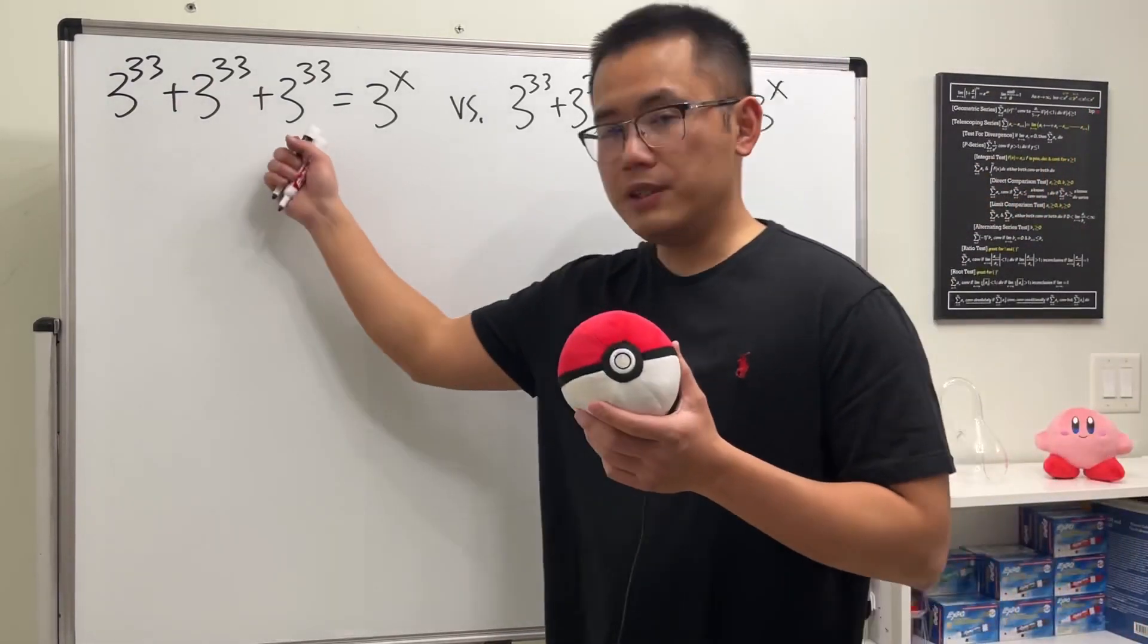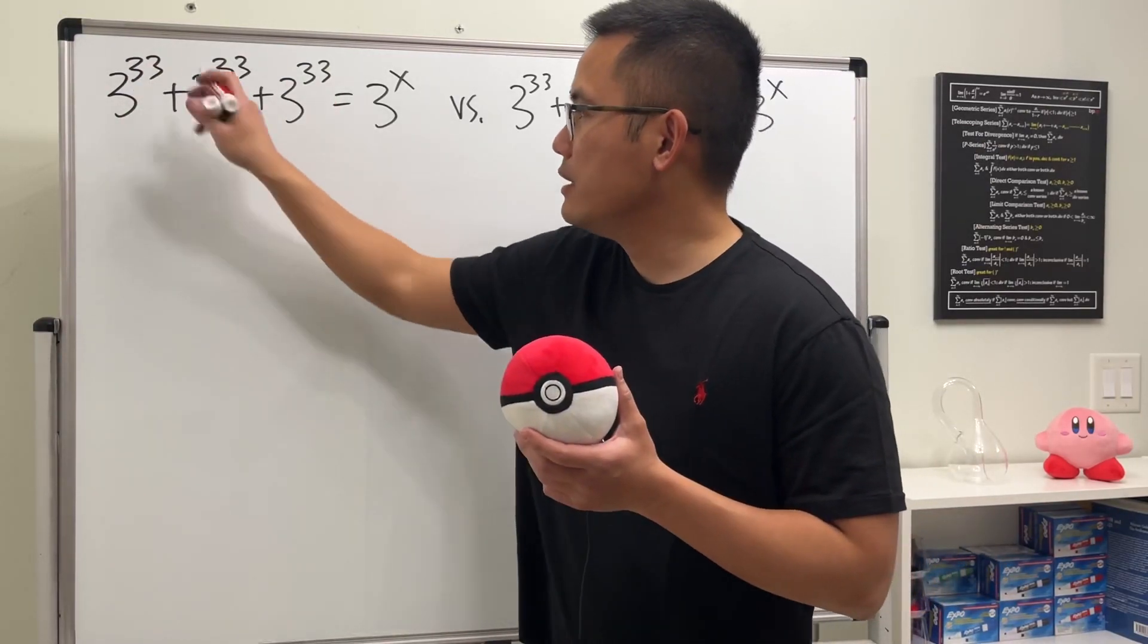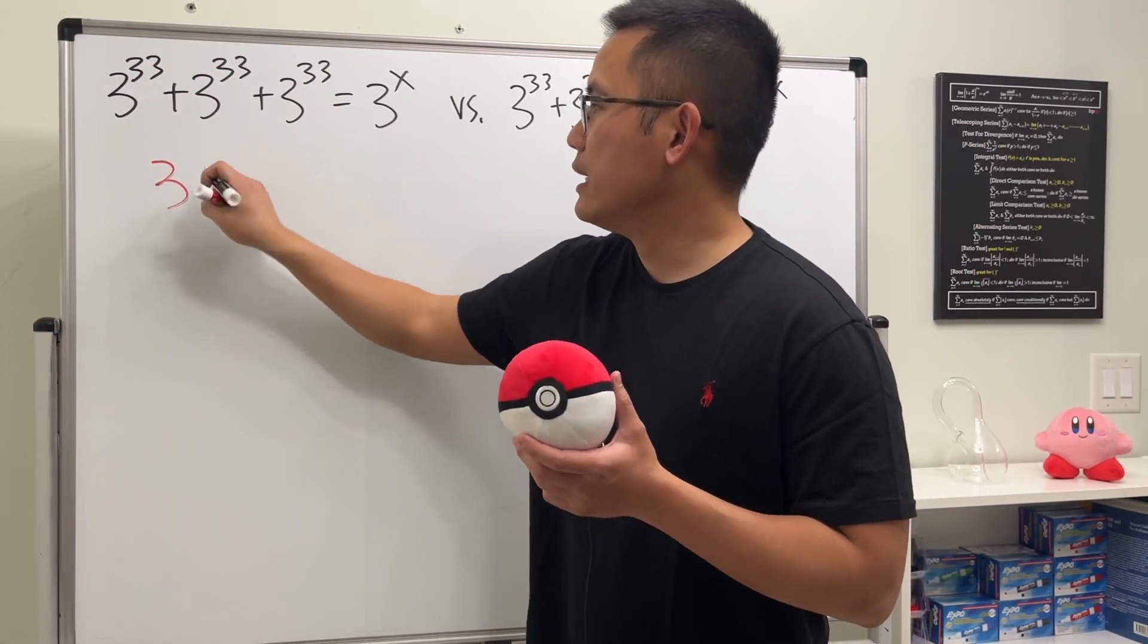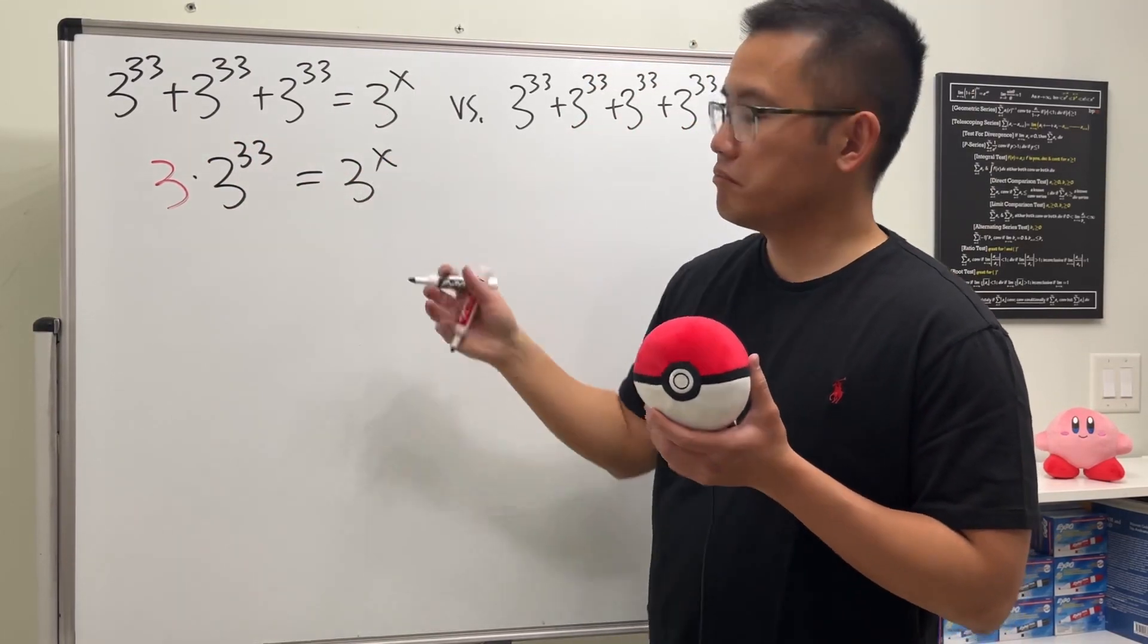For the first one, we have three of them. When we combine like terms, this is just 3 × 3^33 = 3^x. So far so good. What's so good about this is that this is the same as 3 to the first power.